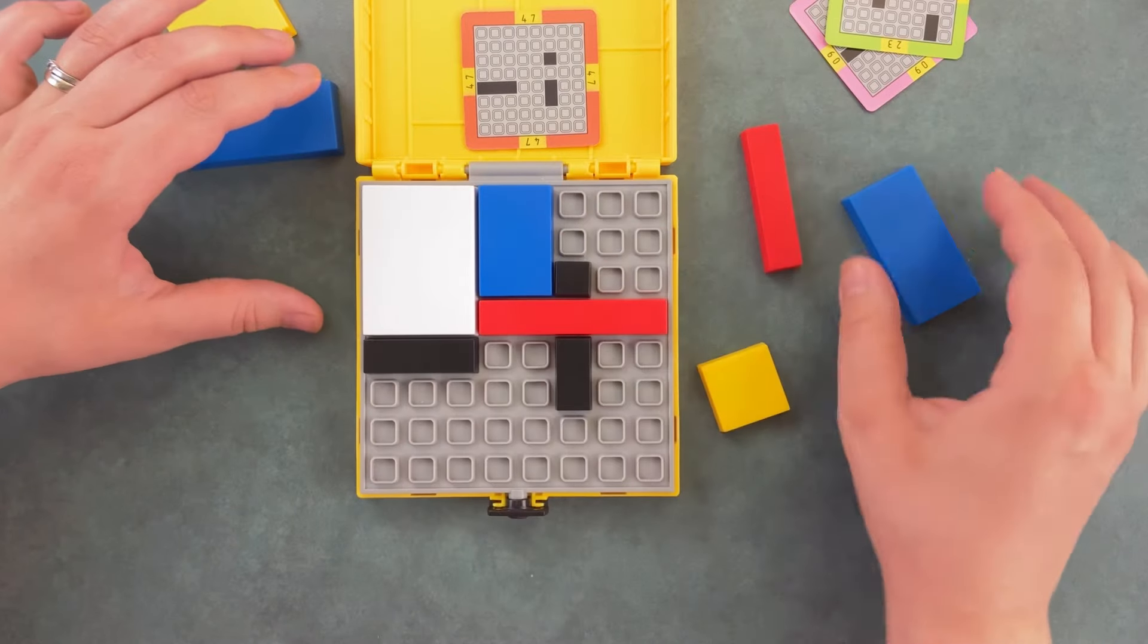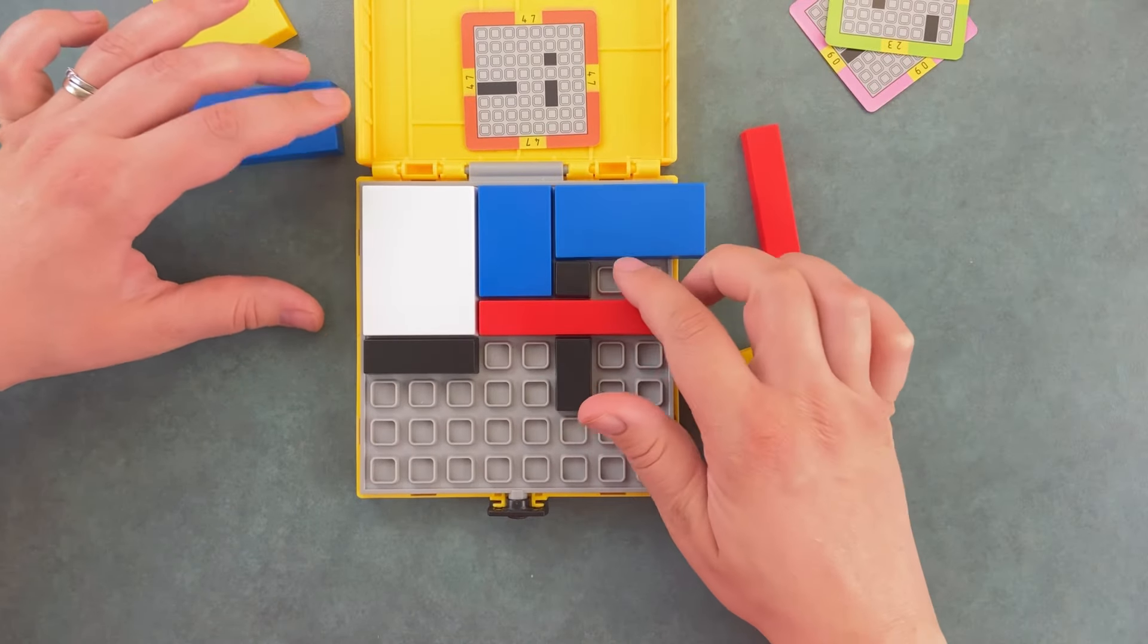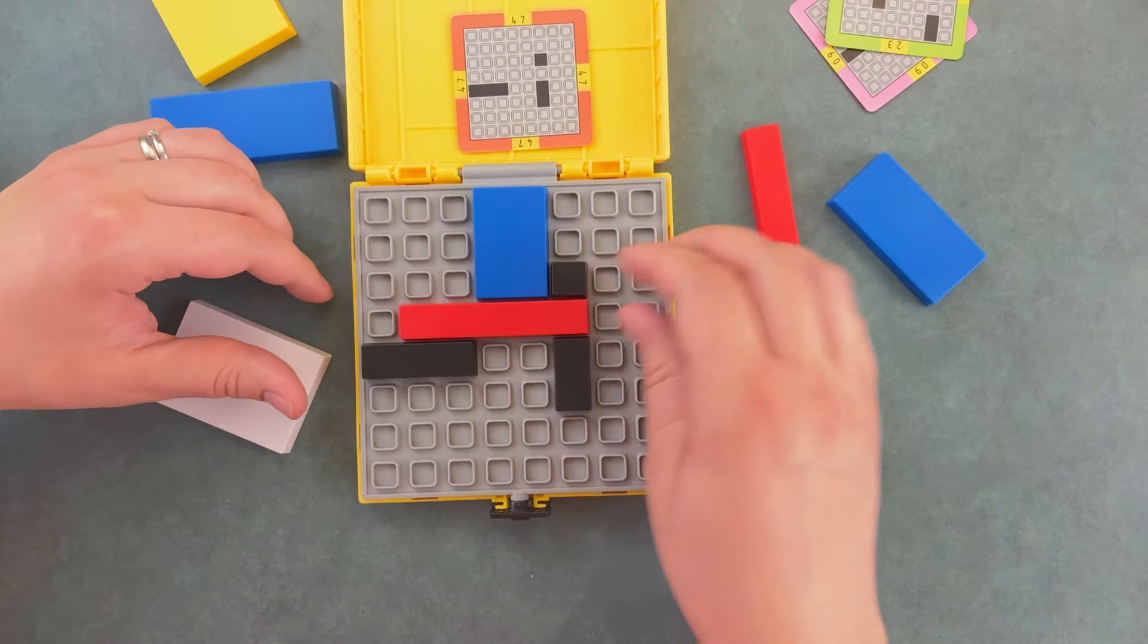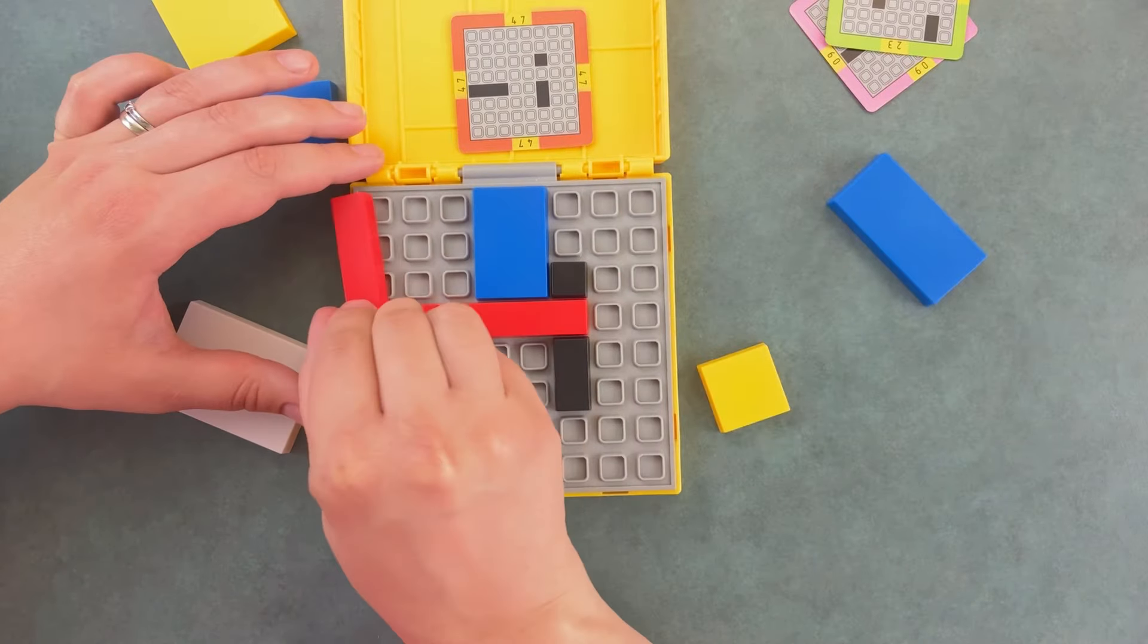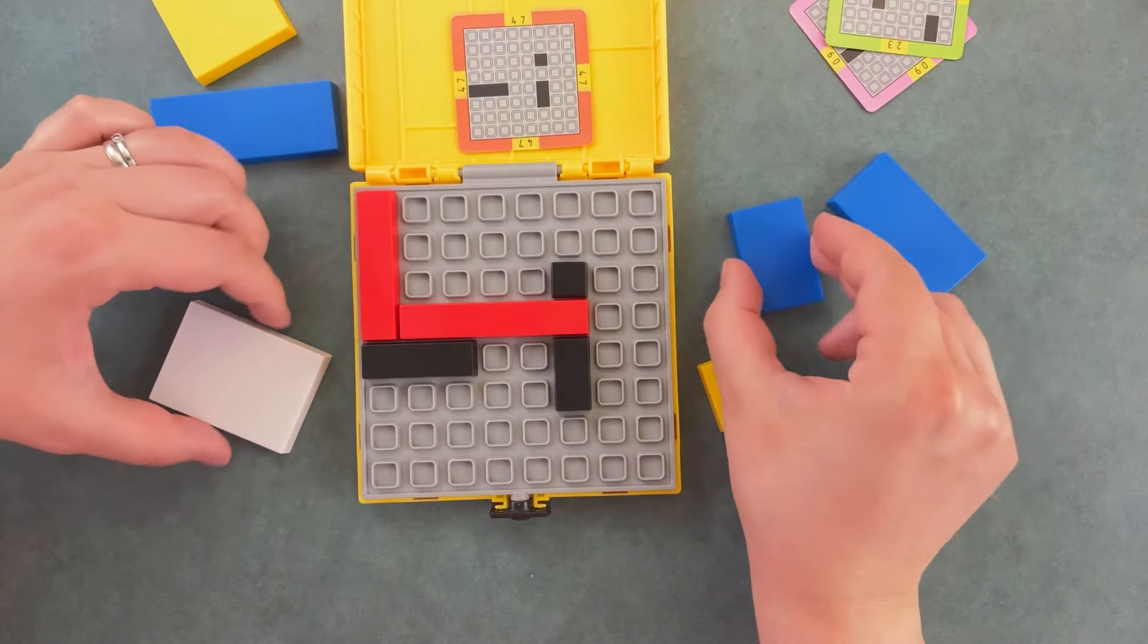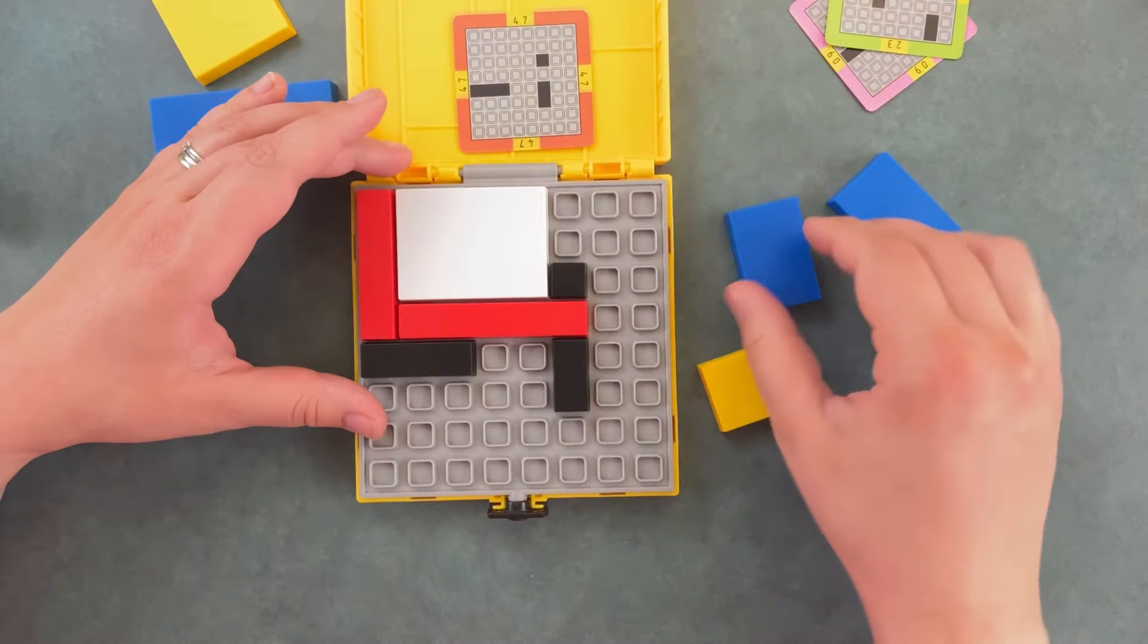If we place this blue piece here, unfortunately we do not have the blue piece we need for this side. Instead, move this red piece over. You can take this red piece and place it up here. Remove the blue piece, placing this white piece up here.